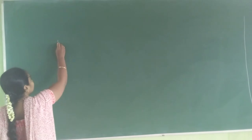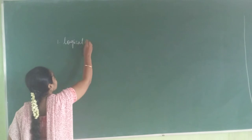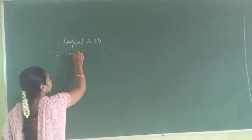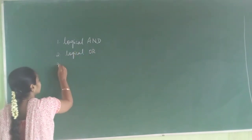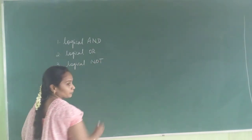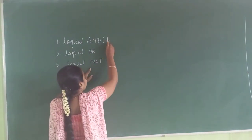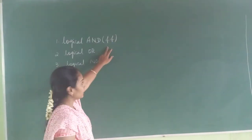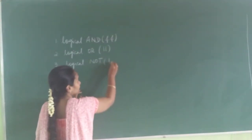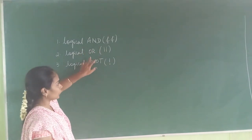Yesterday we covered logical operators — there are three types: logical AND, logical OR, and logical NOT. These are the three logical operators. AND is given with the symbol ampersand (&&). OR is given with two lines (||), and NOT is given with the exclamation symbol (!). These are the symbols given for AND, OR, and NOT.